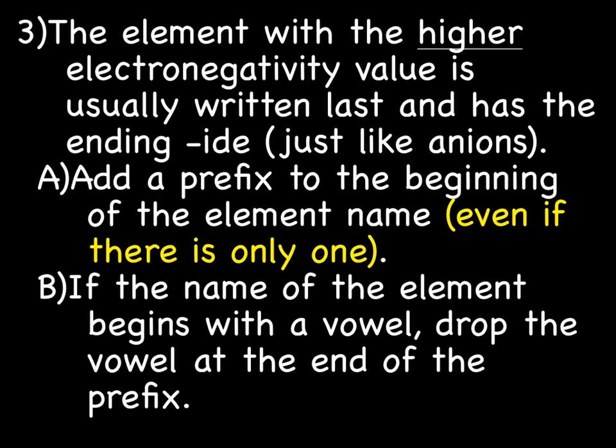The element with the higher electronegativity value is usually written last and has the ending ide, just like anions. You're going to drop the ending and add ide, and you're also going to add a prefix to the beginning of the element name, even if there's only one. So with the second name, if there's only one, you'll use the prefix mono. If the name of the element begins with a vowel, drop the vowel at the end of the prefix.